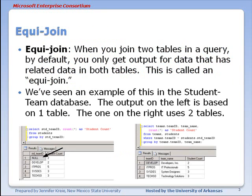We've seen an example of this in the student team database. We see the output on the left where we're just using the students table and we can see that we actually have students with no team. But if we create or add the teams table to the query then the students without a team disappear from the output. That's the result of an equi-join.